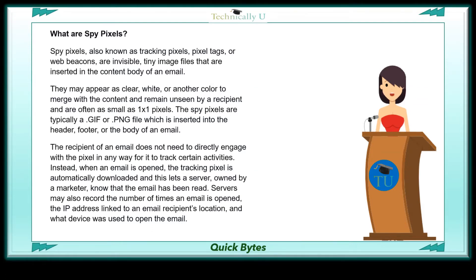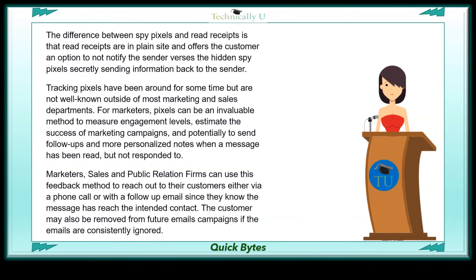Instead, when an email is opened, the tracking pixel is automatically downloaded, and this lets a server, usually owned by a marketer, know that the email has been read. The servers may also record the number of times an email is opened, the IP address linked to an email recipient's location, and what device was used to open the email.